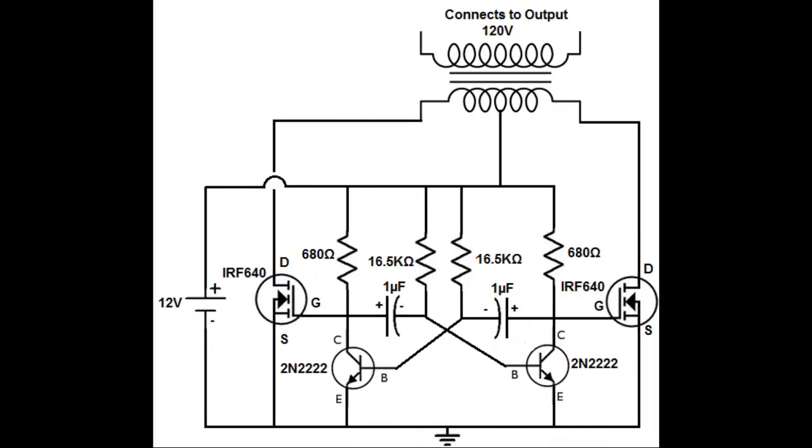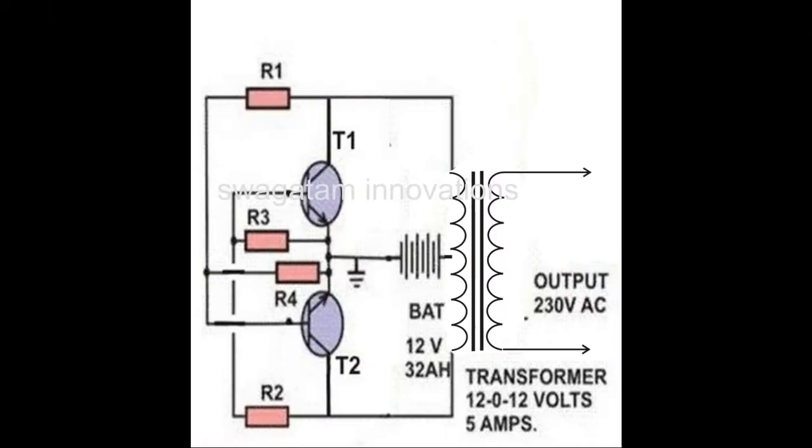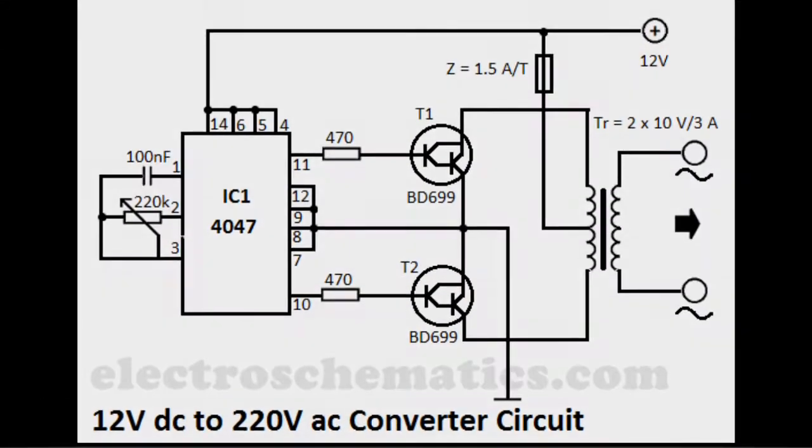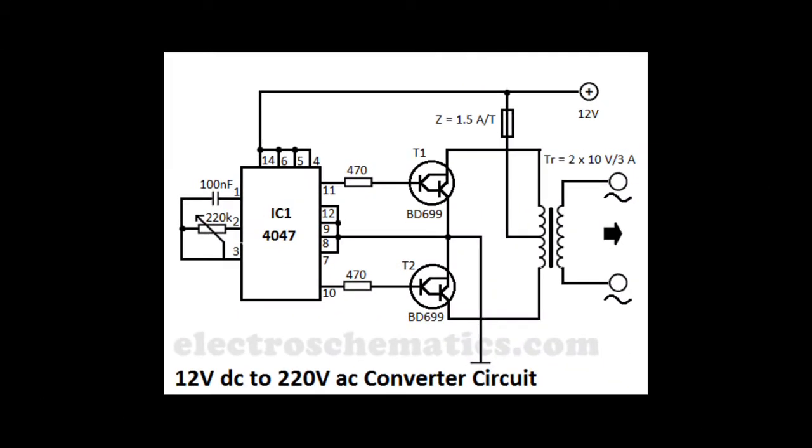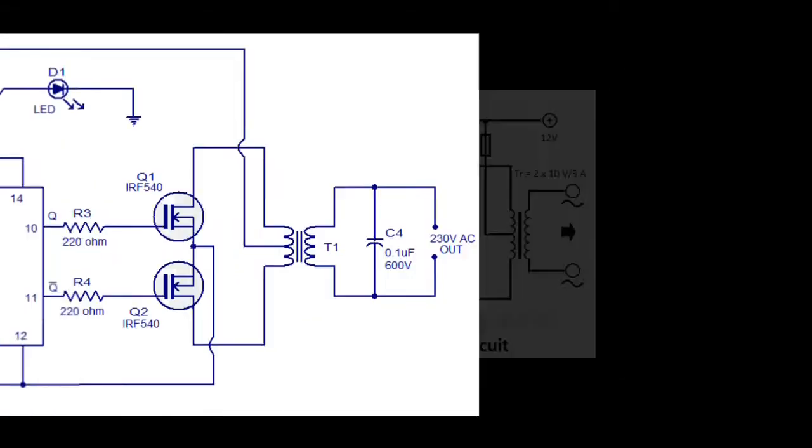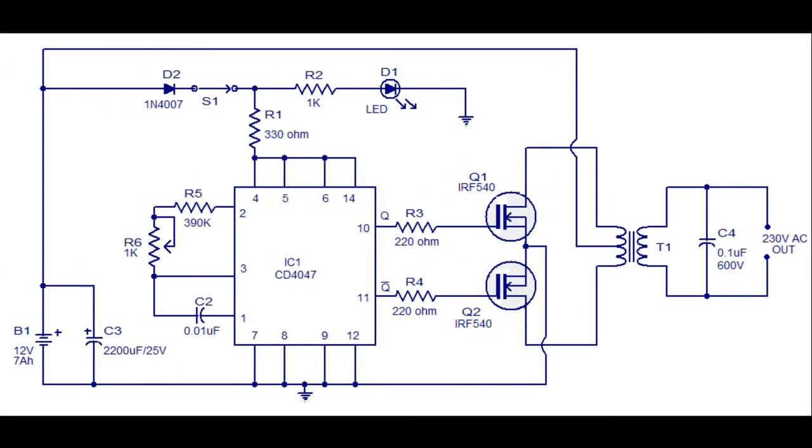This type of inverter is a voltage-based inverter because if your voltage is 12 volts, then your inverter runs continuously. But if your voltage is low, your inverter stops working. So this inverter is called a voltage-based inverter.